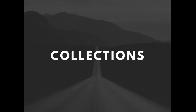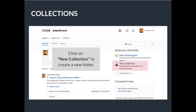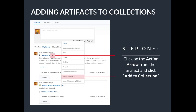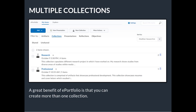After artifacts are uploaded, you can create collections. A collection is a categorized folder of artifacts. You can create a new collection by clicking the paper clip icon on the right side of the home page. Next, create a title and description and then click Save and Close. When your collection is created, you can add artifacts to it. Select an artifact, then click on the action arrow and choose Add to Collection. Then click on the collection you would like to add your artifact to, and finally click the Add button to transfer your artifact to the chosen collection. A great benefit of ePortfolio is that you can create more than one collection.